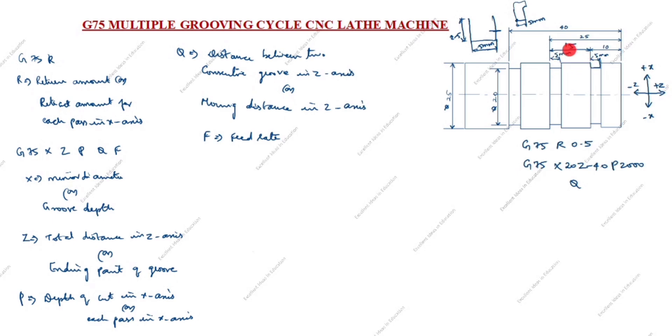15mm means we will write it in microns, so 15,000 microns. Next is F, feed rate. Feed rate we will take it as 0.2.